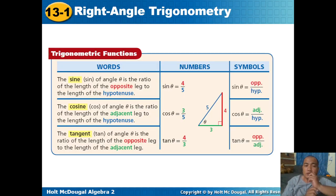For sine, cosine, and tangent, we use the mnemonic SOH-CAH-TOA. The sine of angle theta is the ratio of the opposite leg to the hypotenuse. For the right triangle shown with this angle theta, the opposite side is 4 and the hypotenuse is 5, so sine theta equals 4 over 5.